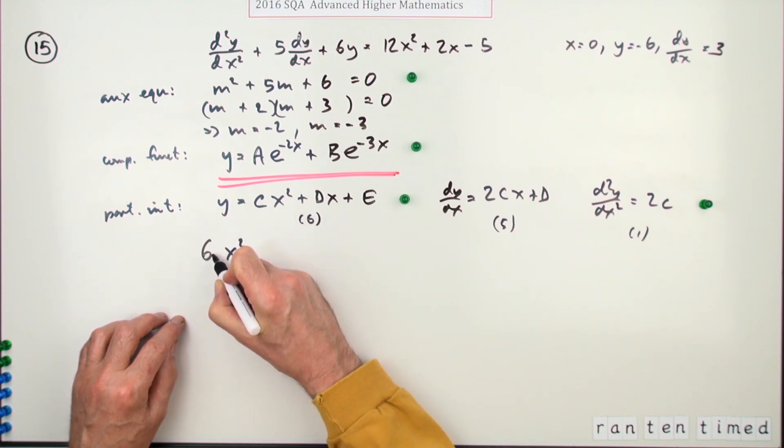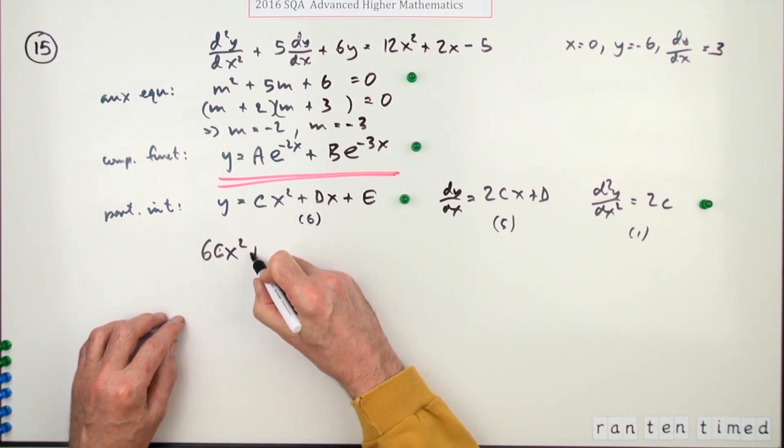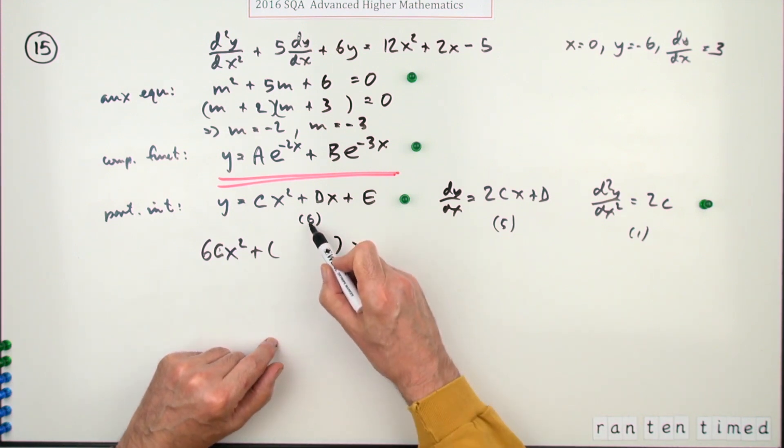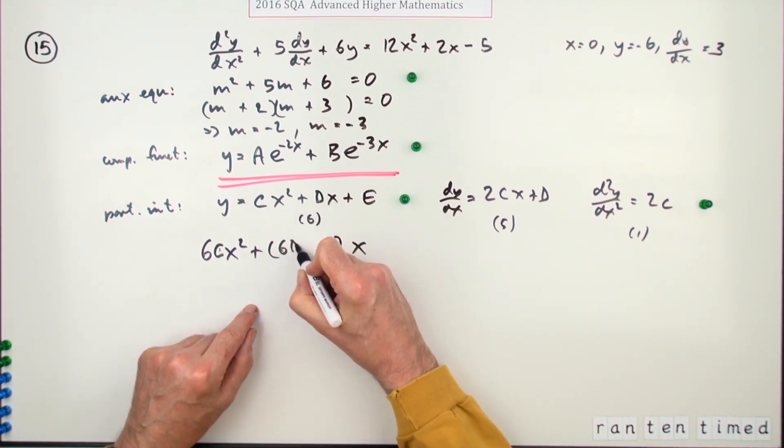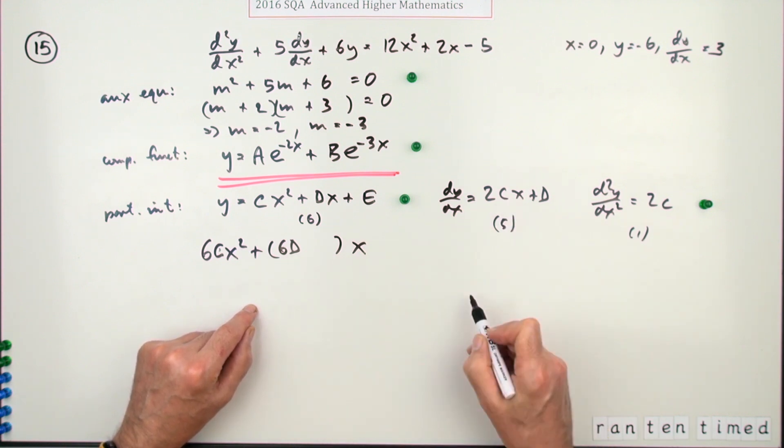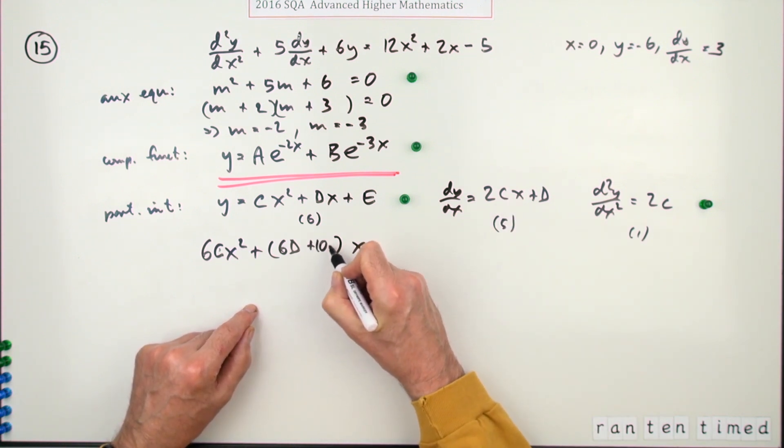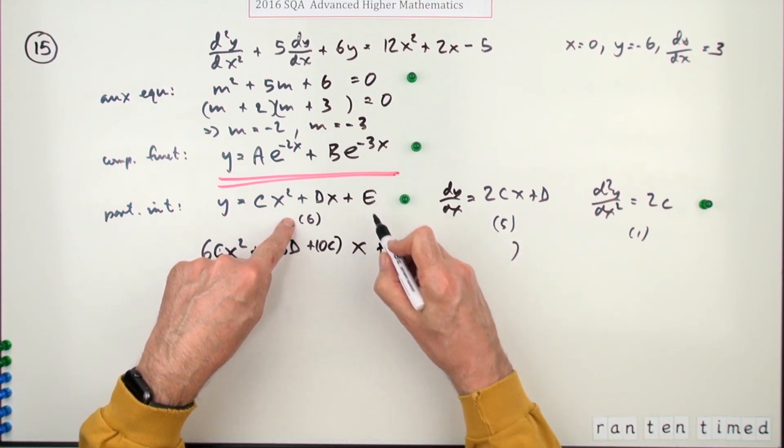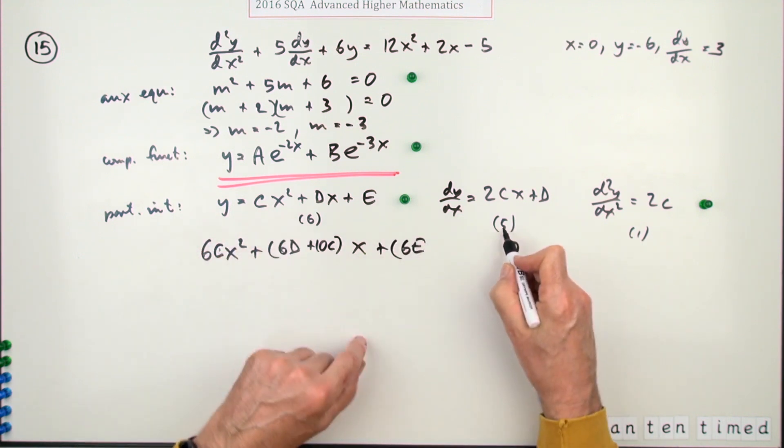So x squared terms, the only x squared term appearing is here, and that'll be six of these, so that's 6cx squared. X terms, well, just take them in order. X term, I'll have six of these, so that's 6d, and five of these, so that's plus 10c.